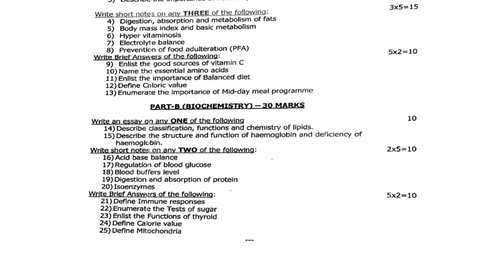Short notes continued — 20th question: isoenzyme. Brief answers: 21st: define immune responses. 22nd: enumerate the tests of sugar. 23rd: enlist the functions of thyroid. 24th: define caloric value. 25th: define mitochondria.